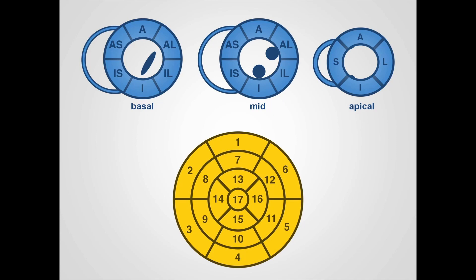One of the key uses of this multi-segment model is that we can relate abnormalities in the segments to the coronary artery that usually supplies them. The left anterior descending coronary artery usually supplies the anterior and anteroseptal segments at the basal and mid-left ventricular levels, and apically it usually supplies both the anterior and septal segments. The right coronary artery normally supplies the basal and mid-inferior and inferoseptal segments and the apical inferior segment. The circumflex coronary artery normally supplies the basal and mid-anterolateral and inferolateral segments and also the apical lateral segment.